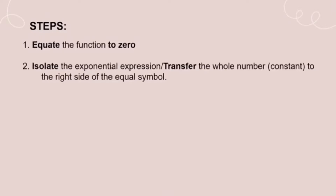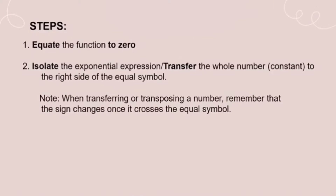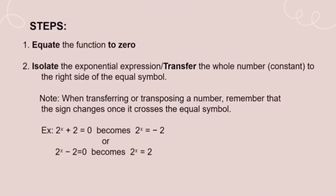These are the steps. First, equate the function to zero. Next, isolate the exponential expression — transfer the constant to the right side of the equal symbol. Note that when transposing a number, the sign changes once it crosses the equal symbol. For example, 2^x + 2 = 0 becomes 2^x = −2, or 2^x − 2 = 0 becomes 2^x = 2.